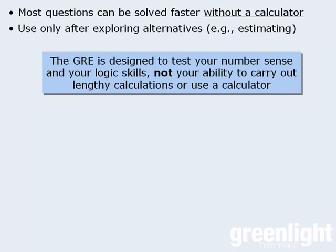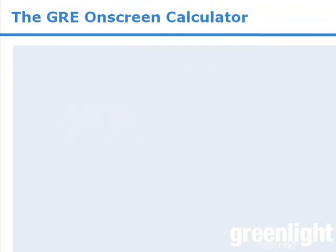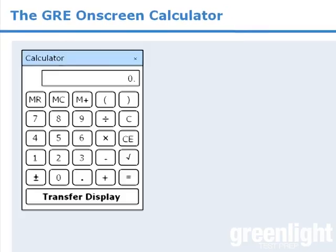Alright, now that I've made my argument against using the on-screen calculator, let's see how this works. To begin, while you're taking the test, you'll see an icon that looks something like this. By clicking on this icon, you'll call up the calculator that looks something like this.